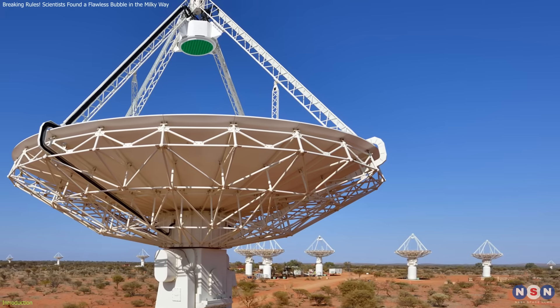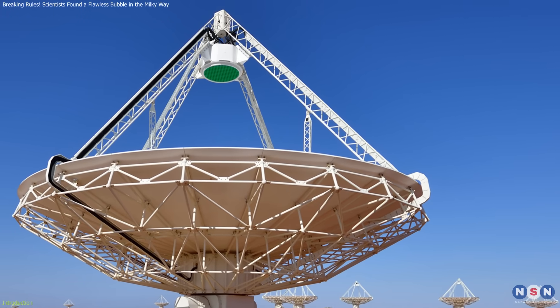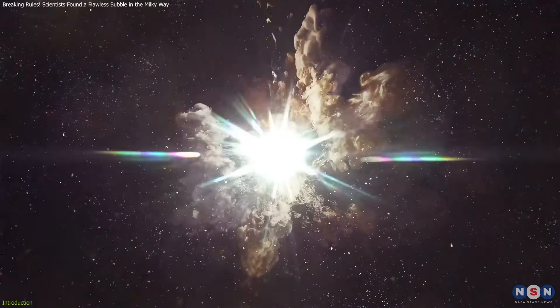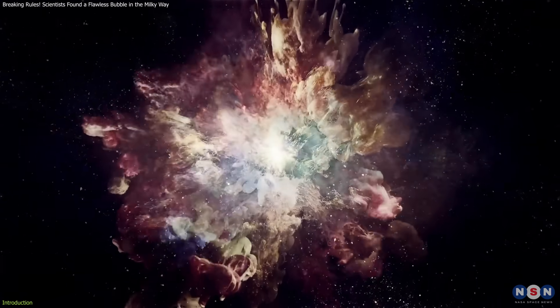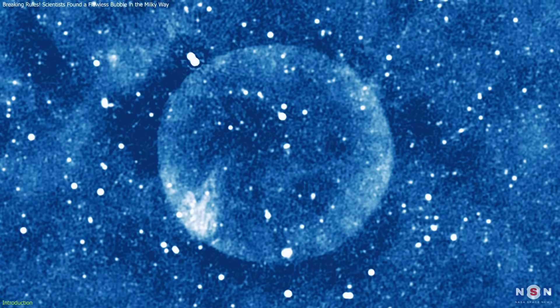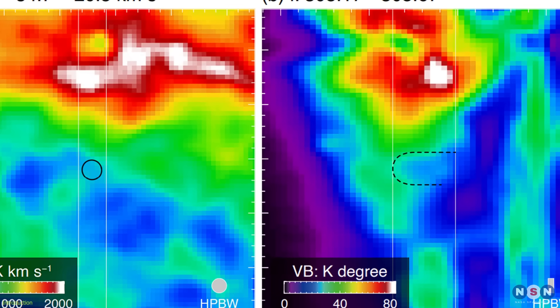Found using Australia's ASKAP telescope, it defies expectations with its flawless shape, unlike the usual chaotic debris from stellar explosions. Even stranger, it's only visible in radio waves with no trace in other wavelengths.